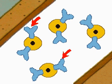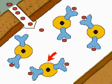Once the T lymphocytes have been sensitized by the antigen, they can produce antibodies and confer immunity. This is the basis of immunization against tuberculosis.